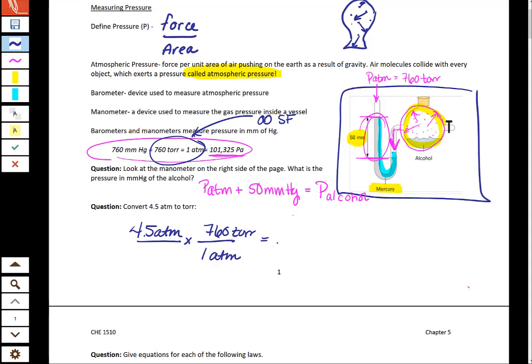When you put that in your calculator and you get 3,420 torr, what will end up limiting your significant figures is the atmospheres here, that 4.5 atmospheres. So in actuality, we will round to 3,400 torr.